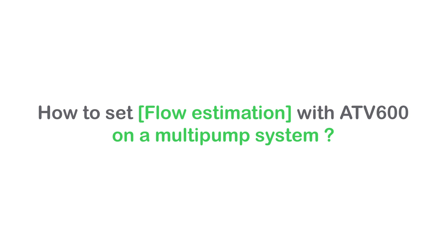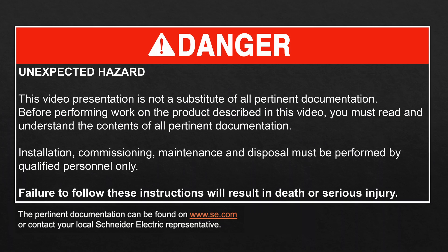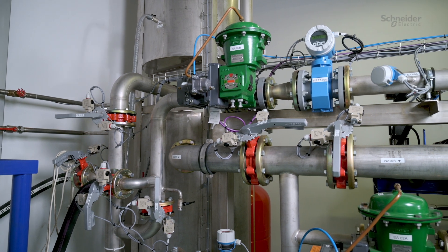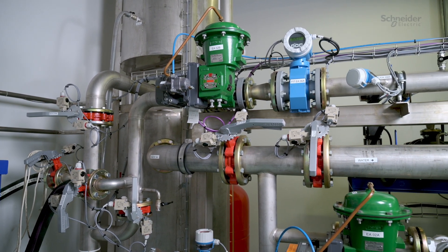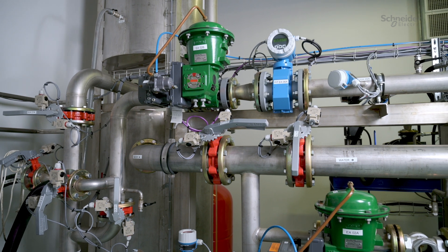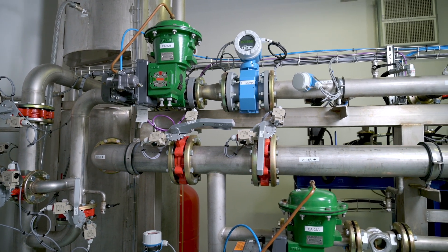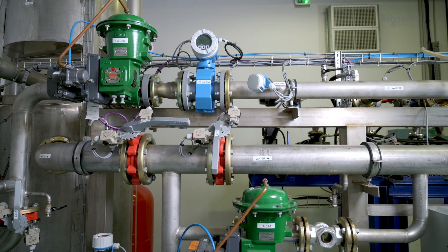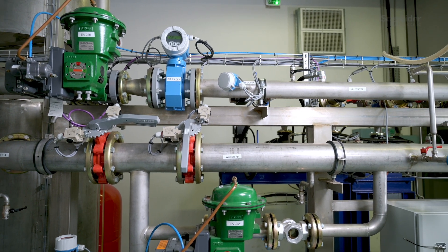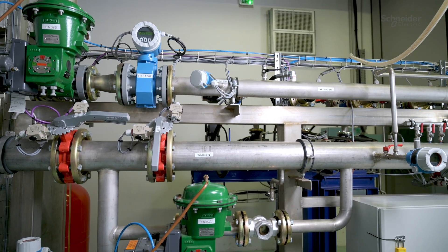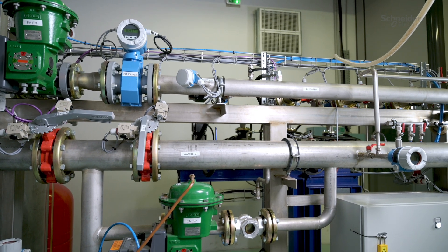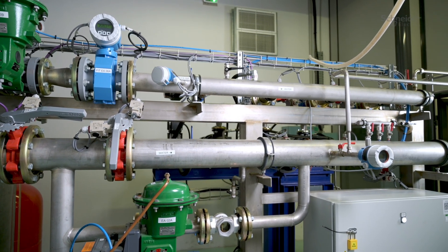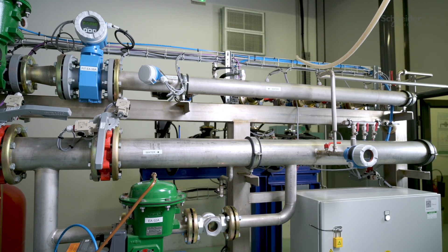How to set flow estimation with ATV600 on a multi-pump system. Today we will show you how to program and use the flow estimation function, which helps to manage pumping systems by estimating and monitoring the flow rate. You can apply this function to a centrifugal pump or any other pump with similar characteristics. This function is most often used in multi-pump systems with a global flow sensor. The goal is to demonstrate the embedded features of Altivar Process ATV600.